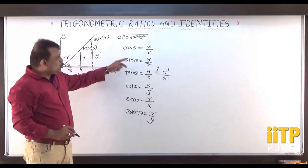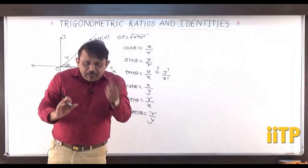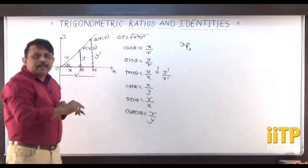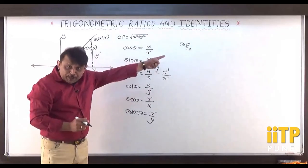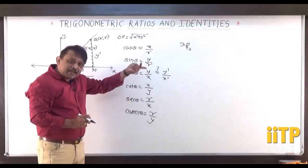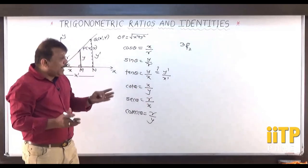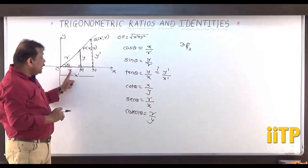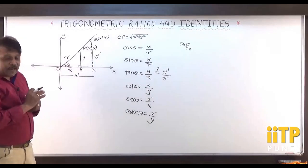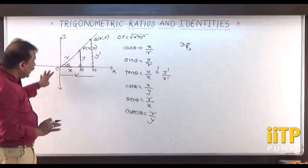We get six permutations and combinations of the three numbers x, y, and r to define six trigonometric ratios. So cos theta, sin theta, tan theta, cot theta, sec theta, and cosec theta are the six trigonometric ratios defined using the coordinate system in trigonometric ratios and identities.